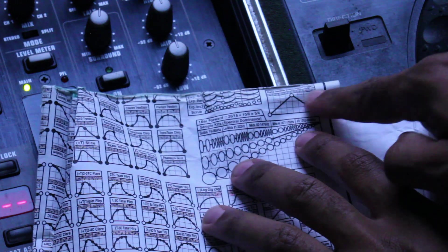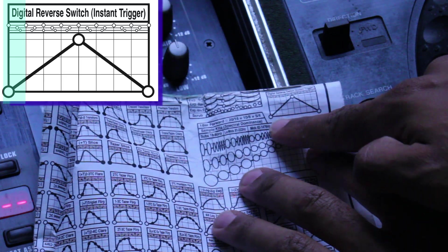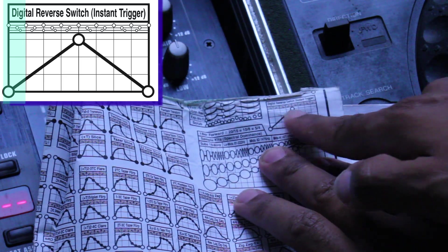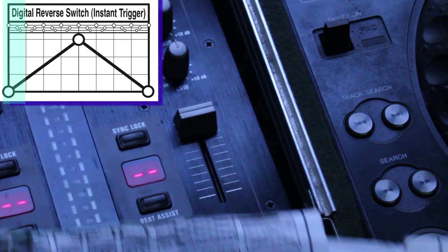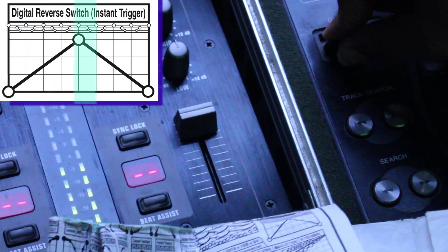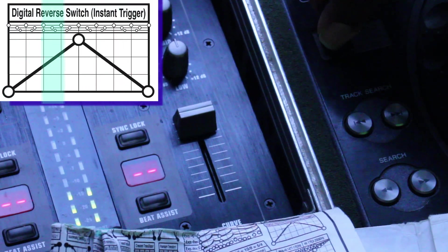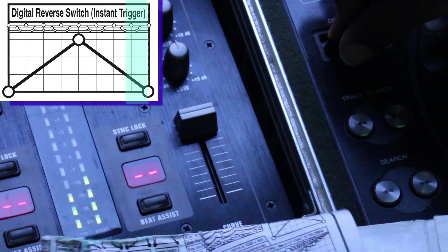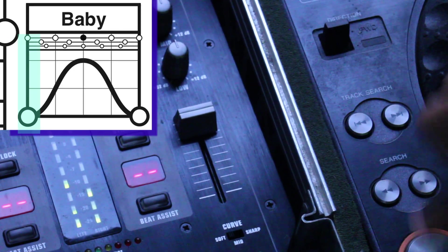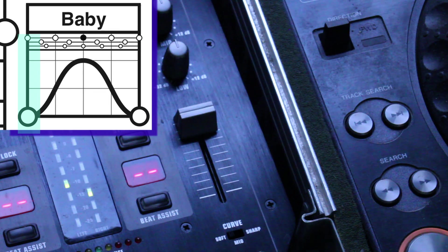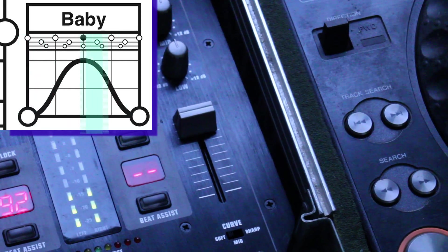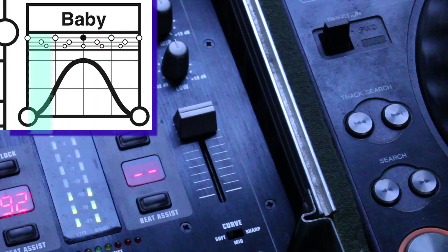Like this — just a perfect triangle going forward and back. That's digital reverse toggling. So this does not sound like a baby scratch. We've cleared it up — a baby scratch sounds like this.